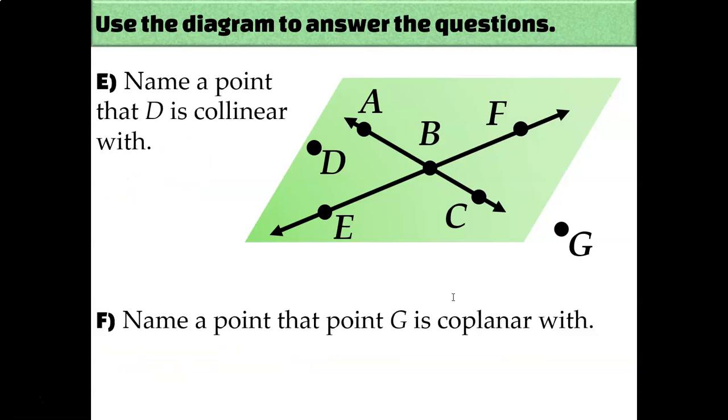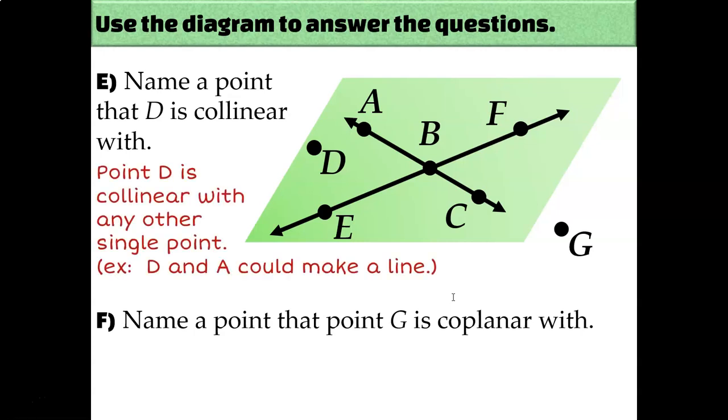Now this next question might seem like there's no answer. It says name a point that D is collinear with and D is just a single point that has no lines drawn through it, so you might think that there's no answer. But remember that a line can be drawn through any two points. So for example, I could say that point D is collinear with point A and draw a line between them.